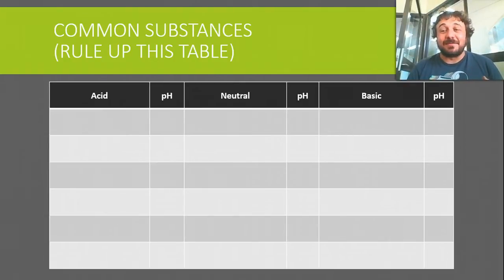Basically, this is the table I want you to rule up, common substances. There's room there for 6 acids, 6 neutrals, 6 bases, and I want you to put their pH beside them.